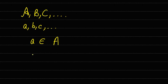And if element a does not belong to the set A, then we write it using the epsilon sign with a cross through it. This represents that element a does not belong to the set A.